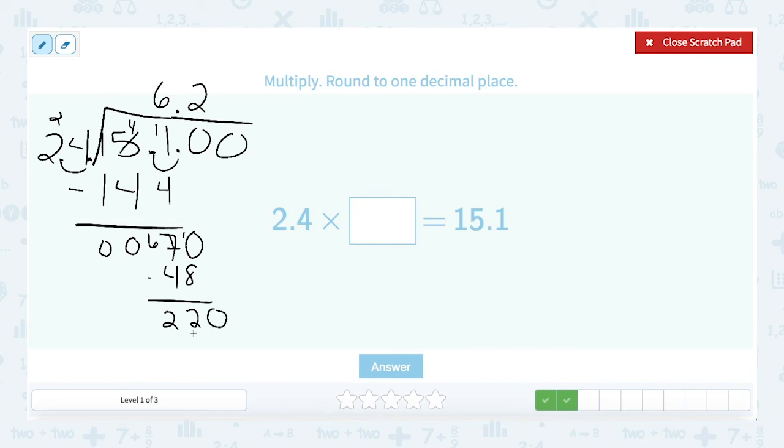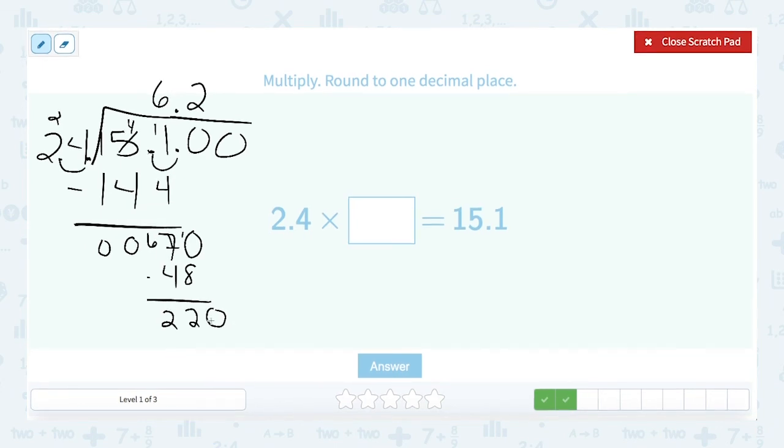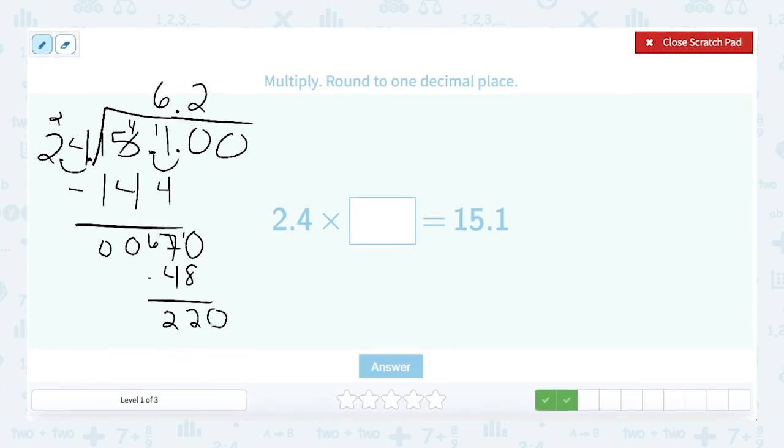And 24 goes into 220. How many times? Well, again, I can estimate this as 25. 25 would go into 200 8 times. So I actually, at this point, can just stop with my problem if I want. I know that this 24 is going to go into 24 is going to go into this at least 8 times, maybe 9 times. Either way, that number is bigger than 5, isn't it?